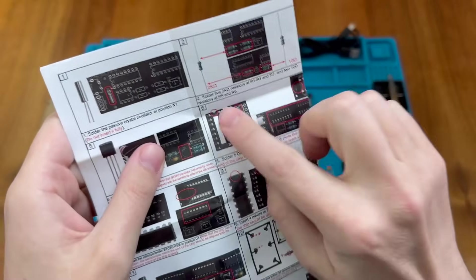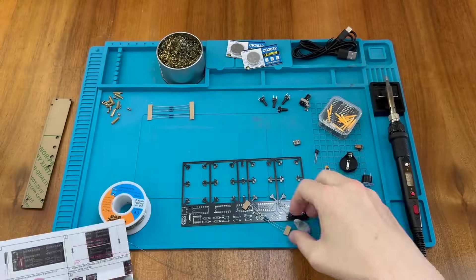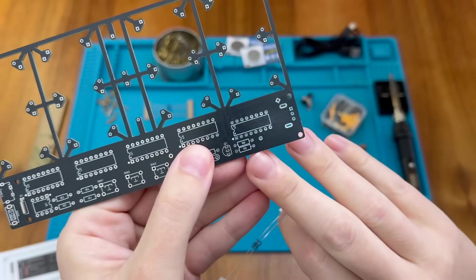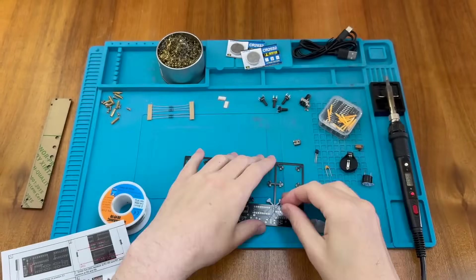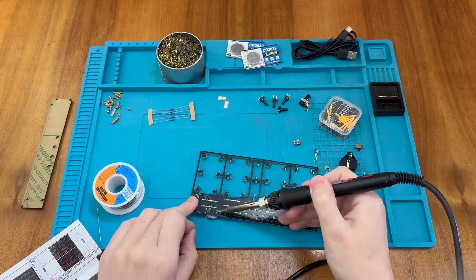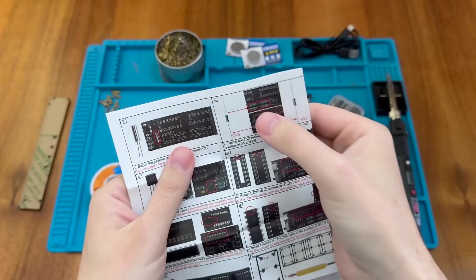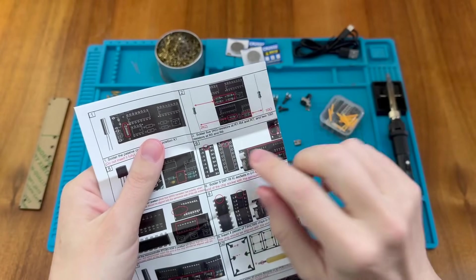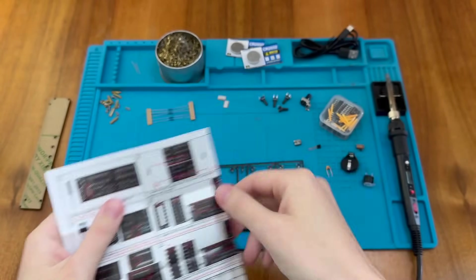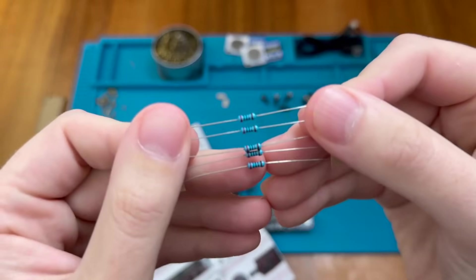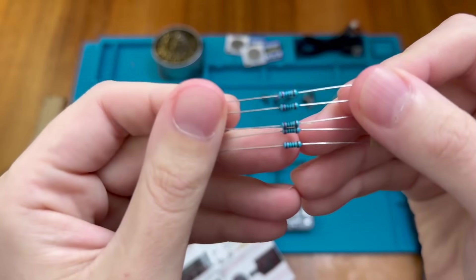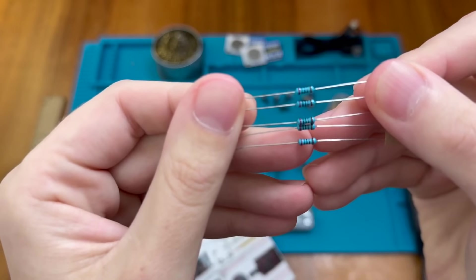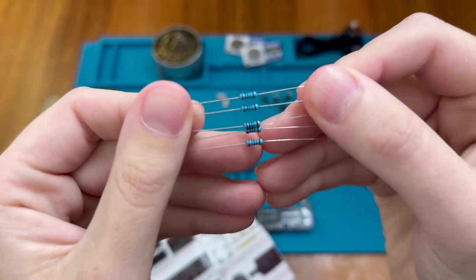So our 10 ohm resistors go at positions R5 and R6 which are just here on the board. And next we have the 2k resistors and they should be in R1 to R4 and R7. So we can look at the color codes on these resistors as well and this time we can see red black black brown with a brown tolerance band 2000.